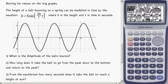So in this case, the height of a ball bouncing on a spring can be modeled in time by the equation h is equal to 6 sin bracket 2π over 7 times t, where h is the height and t is the time in seconds. Let's call this centimeters. We'll call that height centimeters as well.